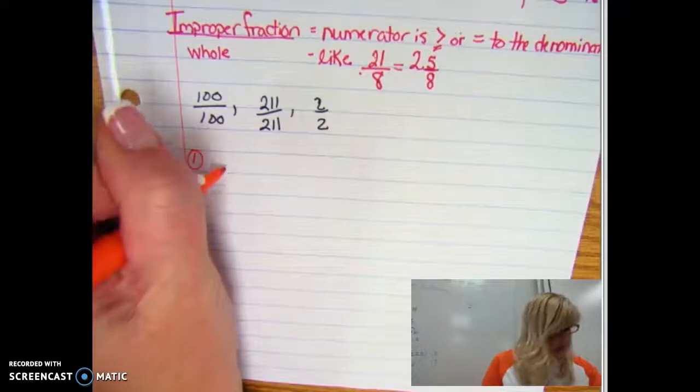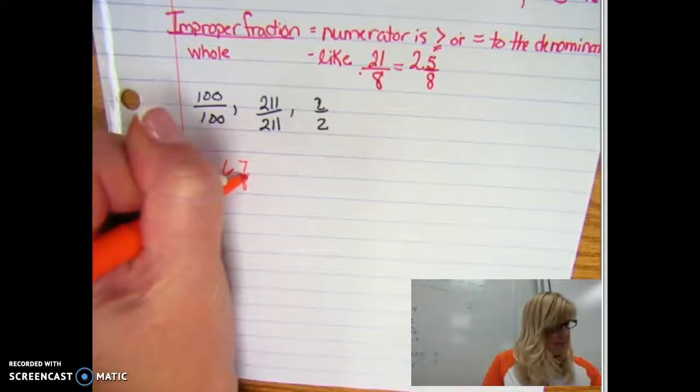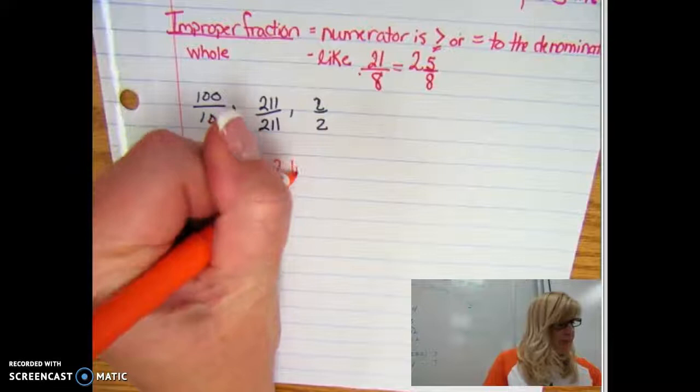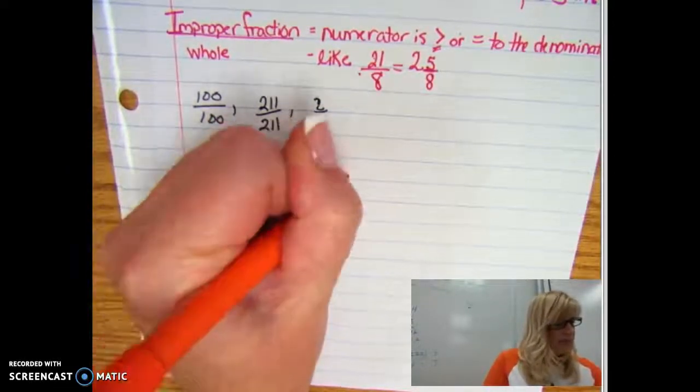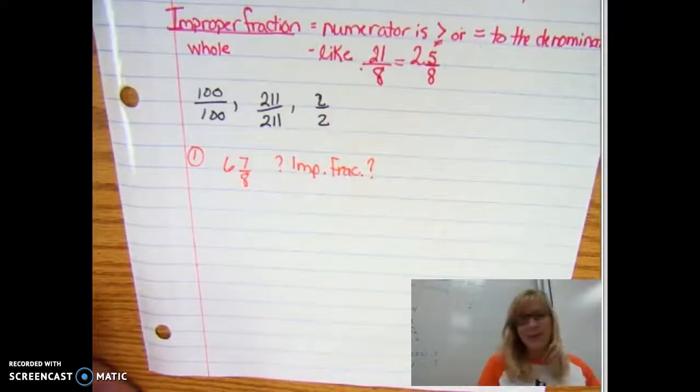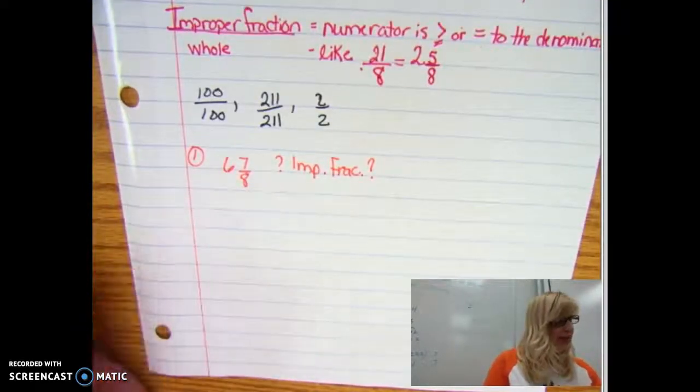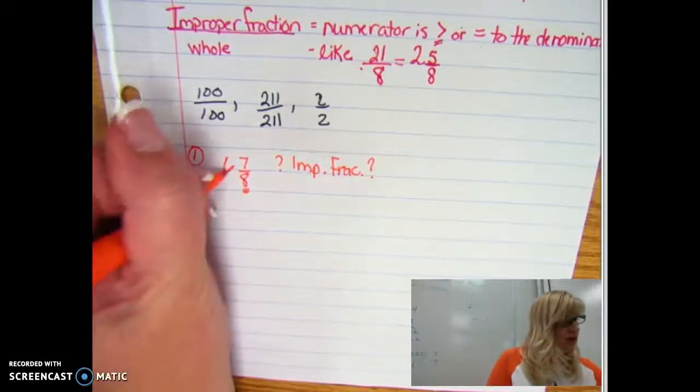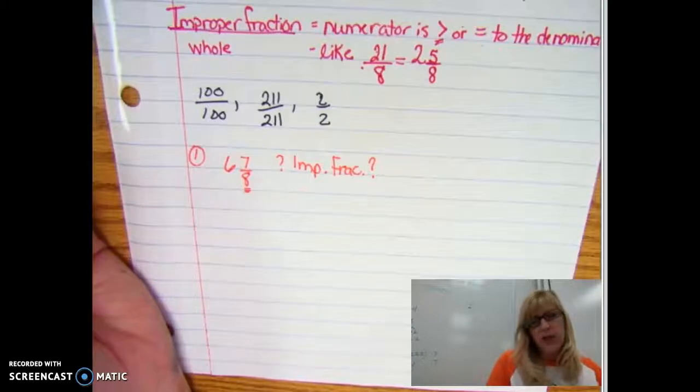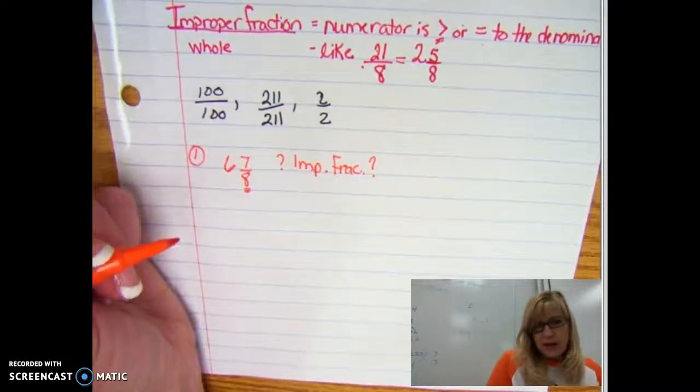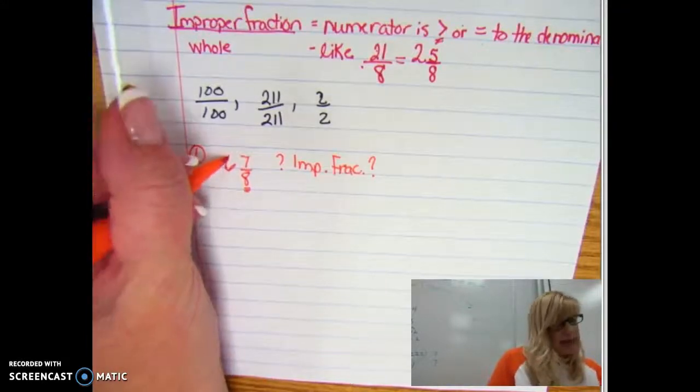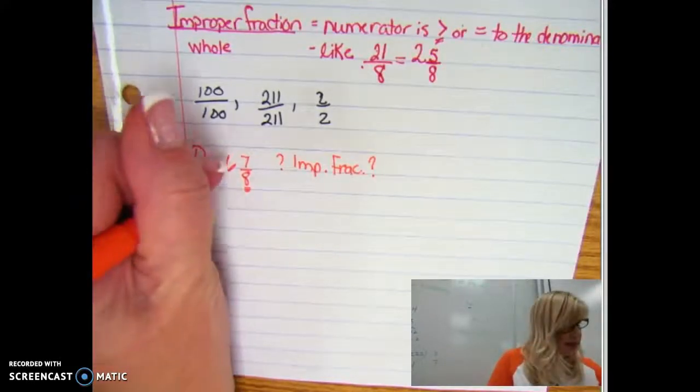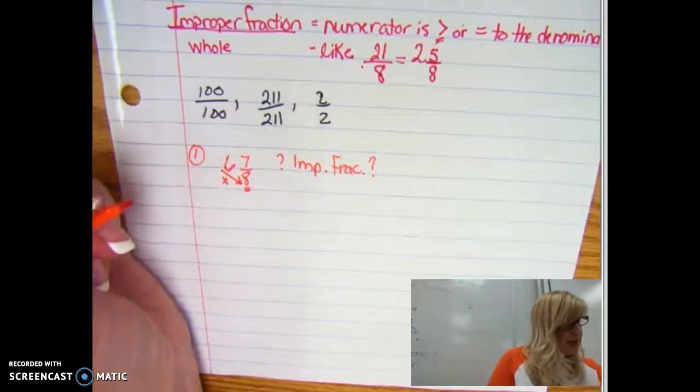We're going to look at example number one as six and seven eighths. Let's say our directions are make this into an improper fraction. How do I make that into an improper fraction? If I have six and seven eighths, I know that I want them all cut into whatever this denominator is, meaning I want each of these wholes to be cut into eight pieces. So if I have six large candy bars and I'm cutting them into eighths, how many is that? Well that's easy. I just multiply these two. That's six times eight, that's 48.